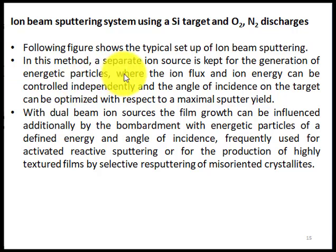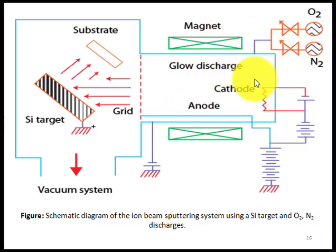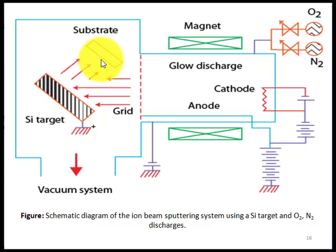The typical setup shows an ion beam sputtering system using a silicon target with oxygen-nitrogen discharges. A separate ion source is used for the generation of energetic particles, where the ion flux and ion energy can be controlled independently, and the angle of incidence on the target can be optimized for maximal sputter yield. The ions of the argon are produced in the ion source region, then strike the silicon target, and the silicon is deposited on the surface of the substrate.